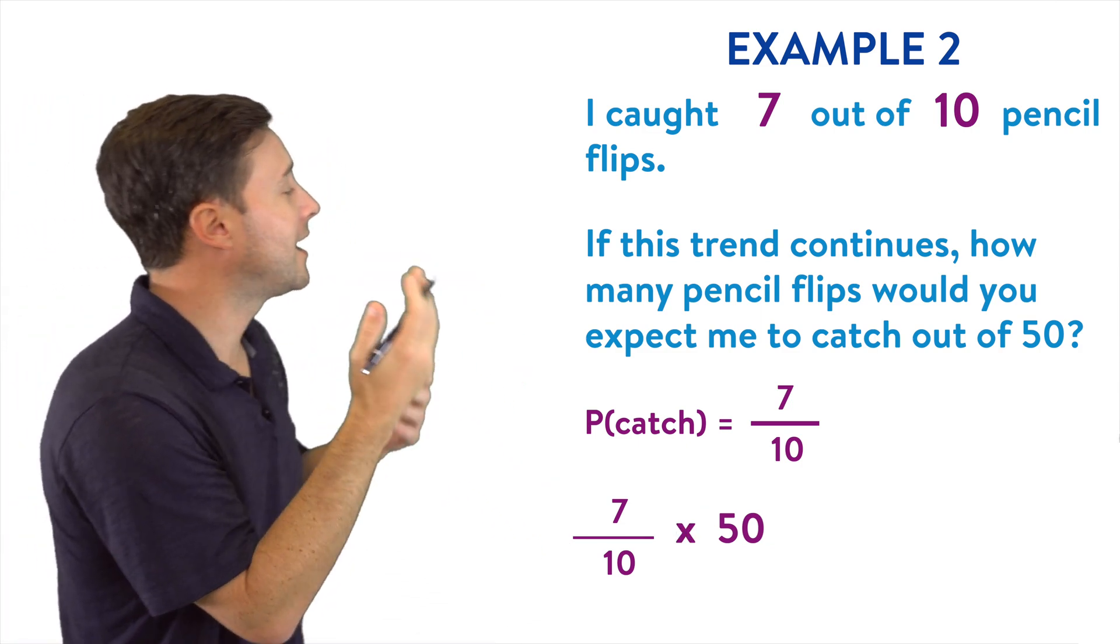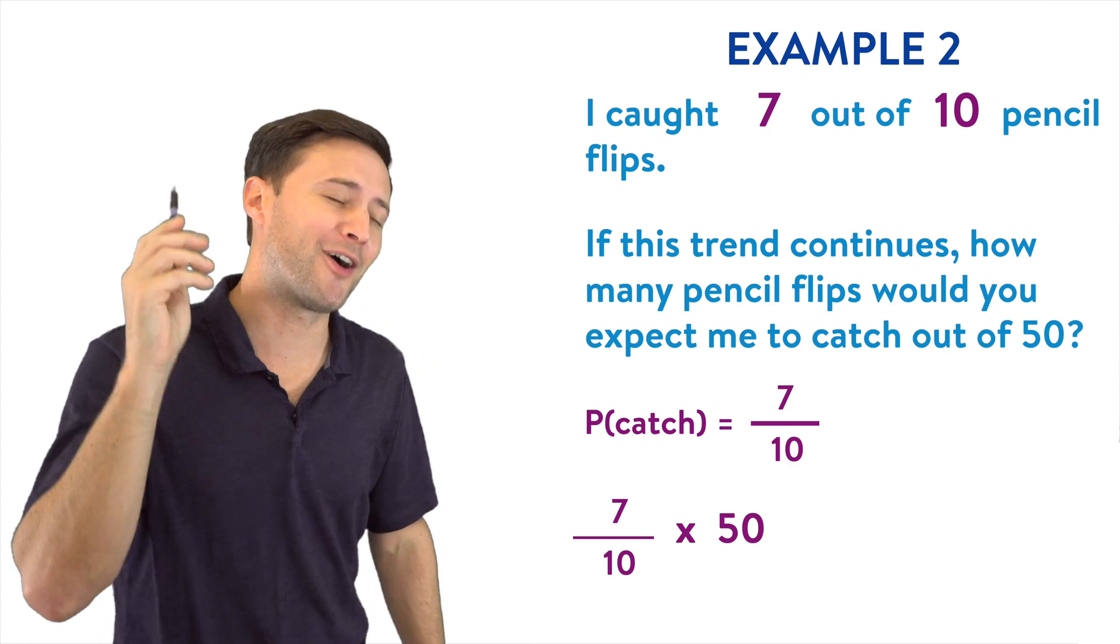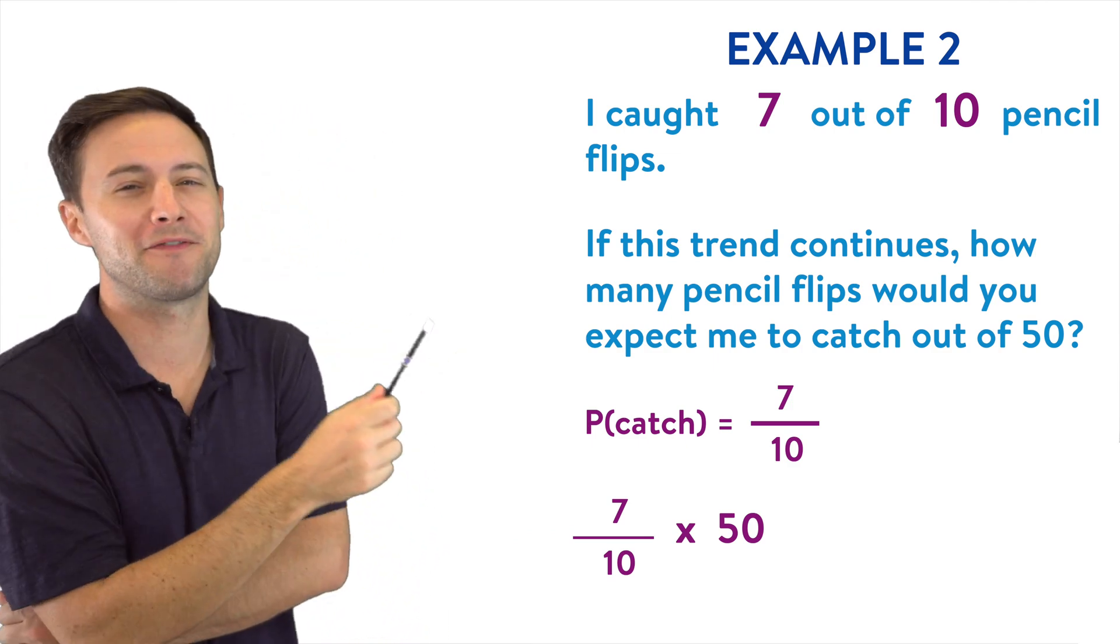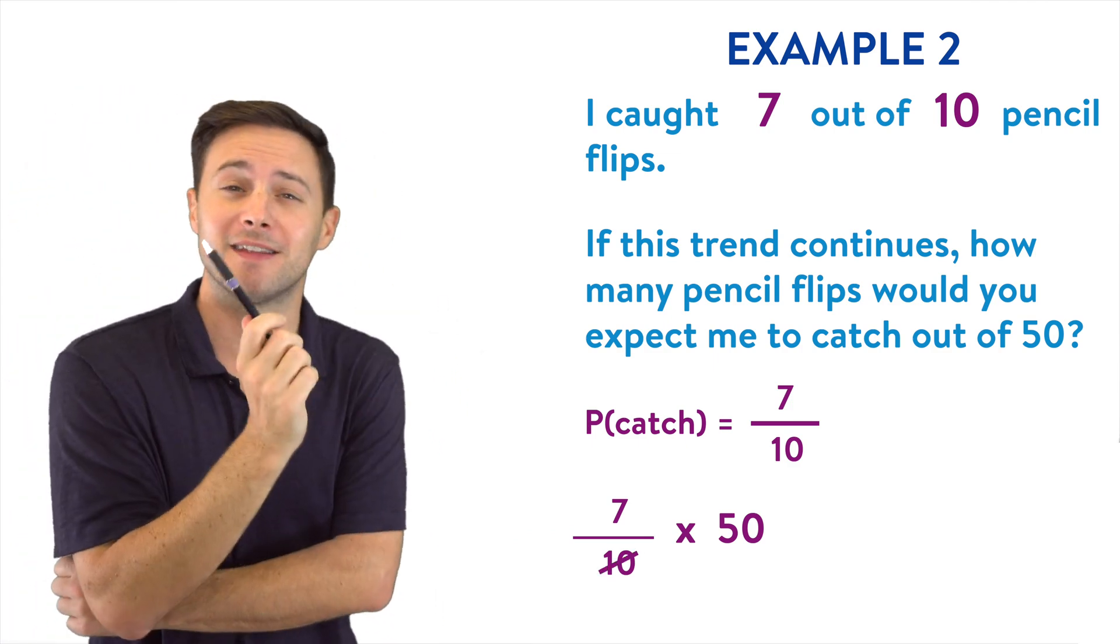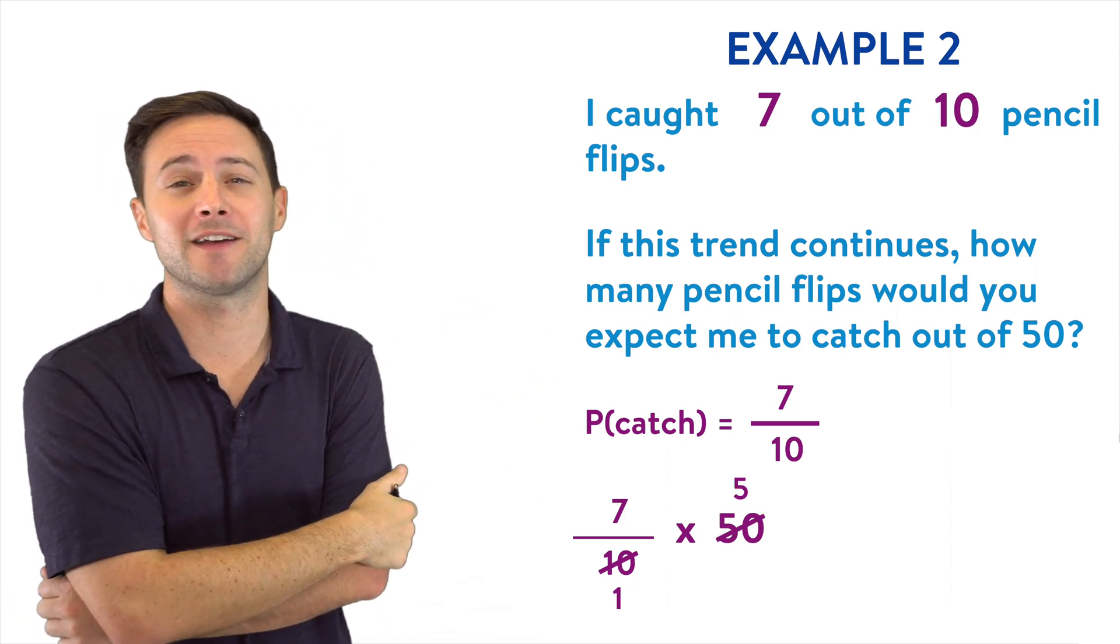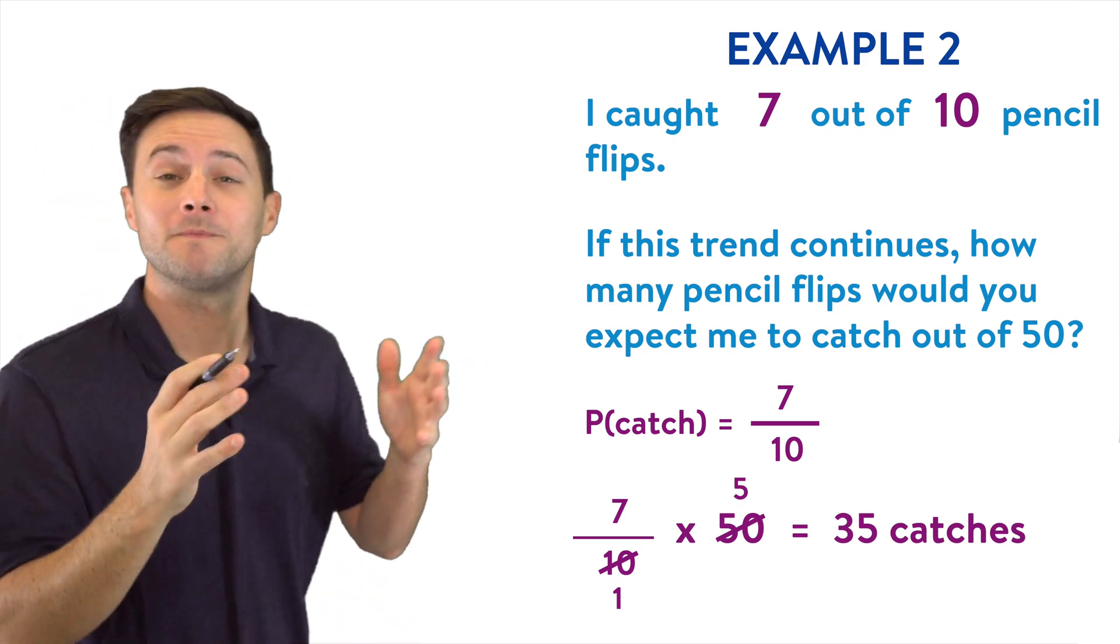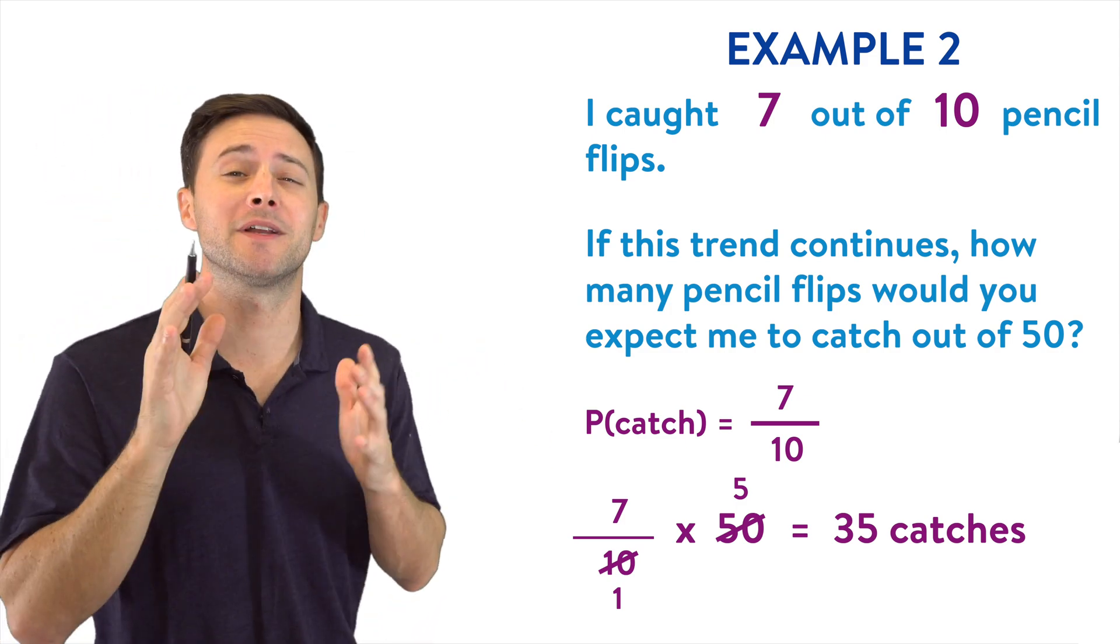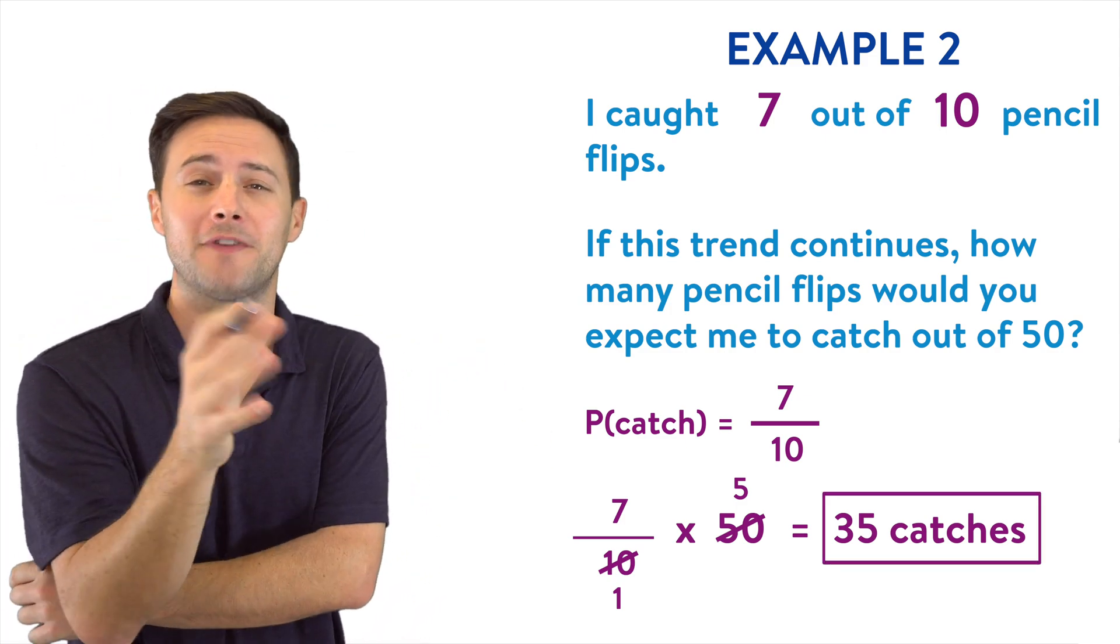So if I do that, before I multiply, always, always, always try to simplify first. So I can simplify the 10 and the 50, that becomes one, that becomes five, seven times five is 35. So out of 50 flips, I would expect to catch 35 of them.